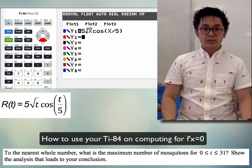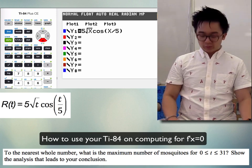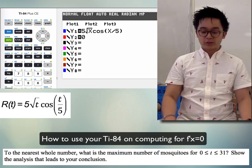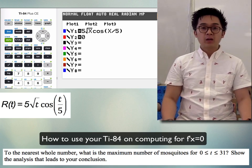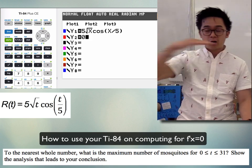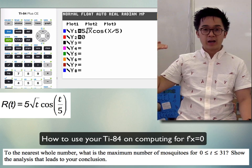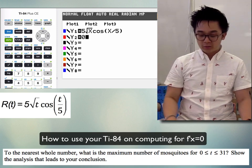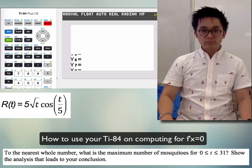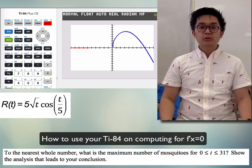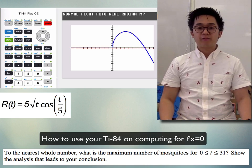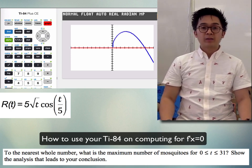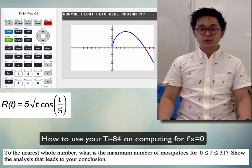Set Y₂ equal to 0 so the TI-84 will graph the horizontal line y = 0, which is the x-axis. If we graph it, we'll be able to compute the critical number without using pen and paper.